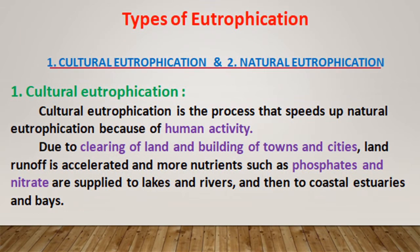There are two types of eutrophication: cultural eutrophication and natural eutrophication. Cultural eutrophication is the process that speeds up natural eutrophication because of human activity.